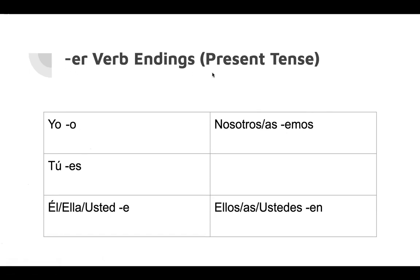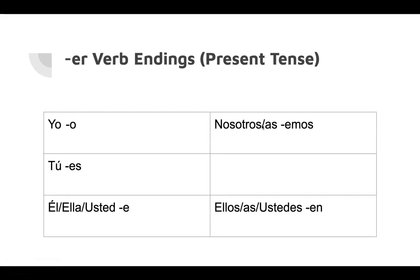And then the ER verb endings — we just started going over these last week. In the yo form, you add an O, and the O ending is the same in AR, ER, and IR verbs — that never changes. In the tú form, you add ES. In the él, ella, usted form, you add an E. In the nosotros form, you add EMOS. In the ellos, ellas, and ustedes form, you add EN. So there's that.